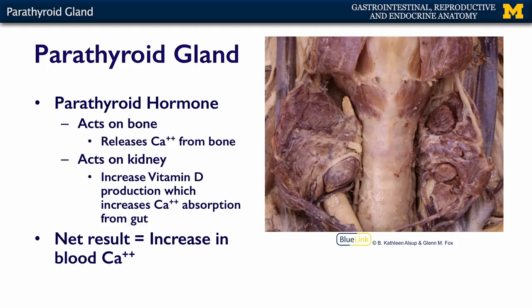Parathyroid hormone acts on the bone and acts in response to low blood calcium. So if your blood calcium is low, parathyroid hormone will be secreted. It acts on the bone and causes the release of calcium from the bones. It also will act on the kidney, and the kidney then will increase its production of vitamin D. And vitamin D then acts on the gut to increase the absorption of calcium from your food. So the net result of parathyroid hormone is going to be an increase in blood calcium.